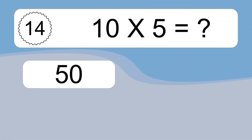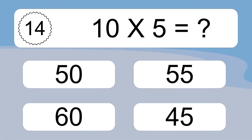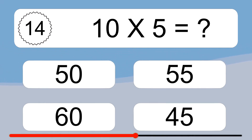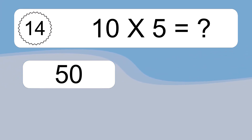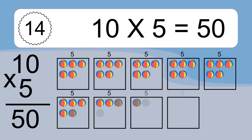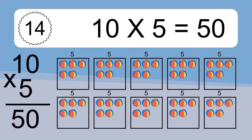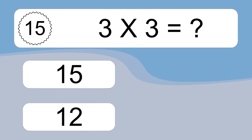Ten times five equals what? Ten times five equals fifty. We have ten boxes, and each box has five colorful balls inside. If you count all the balls in all the boxes together, you will have ten times five balls. This equals fifty balls.